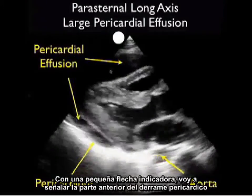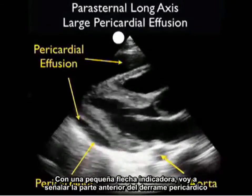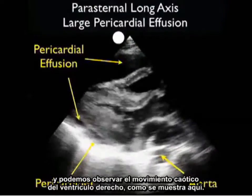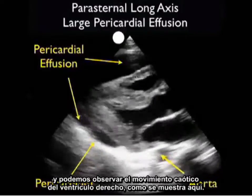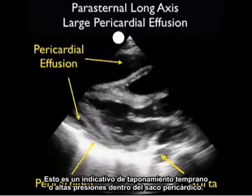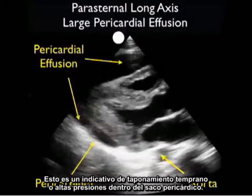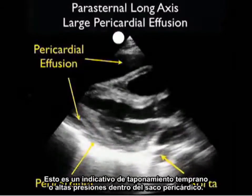The pericardial effusion comes anteriorly to surround the heart. With a small indicator arrow I'll point to the anterior portion of the pericardial effusion and note the chaotic movement of the right ventricle as shown here. This is indicative of early tamponade, or high pressures within the pericardial sac.